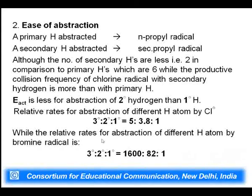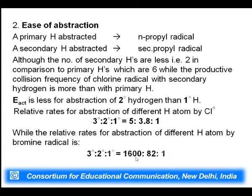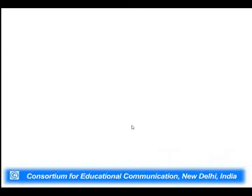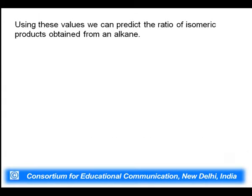For bromine, the relative rate of abstraction was studied and found to be much more selective: tertiary hydrogen = 1600, secondary hydrogen = 82, and primary hydrogen = 1. This large difference in selectivity for bromine (compared to chlorine's 5:3.8:1) explains why bromine is highly selective. Using these ease-of-abstraction values, we can calculate the percentage of each product formed during halogenation of alkanes.